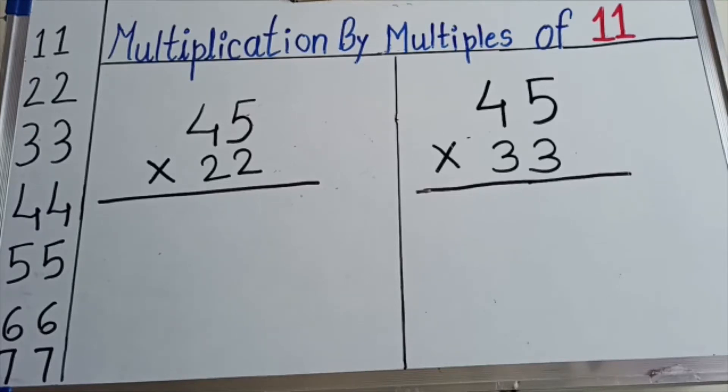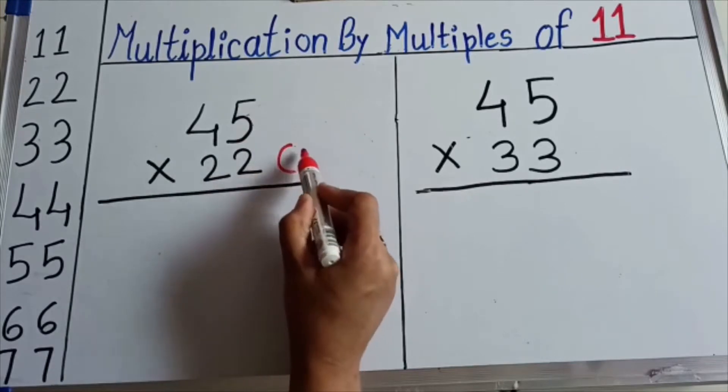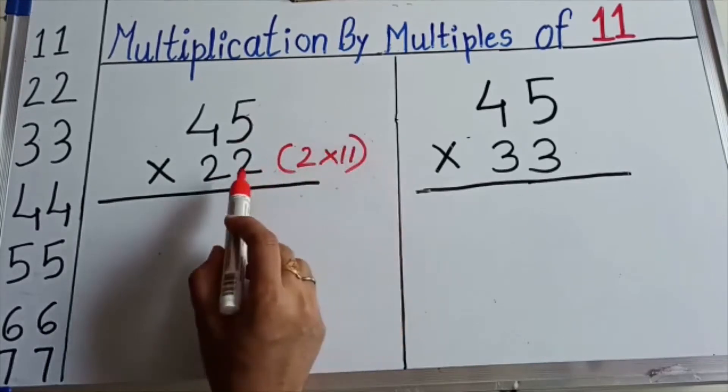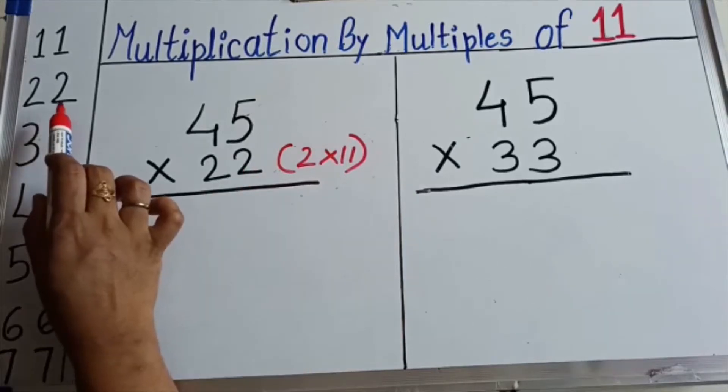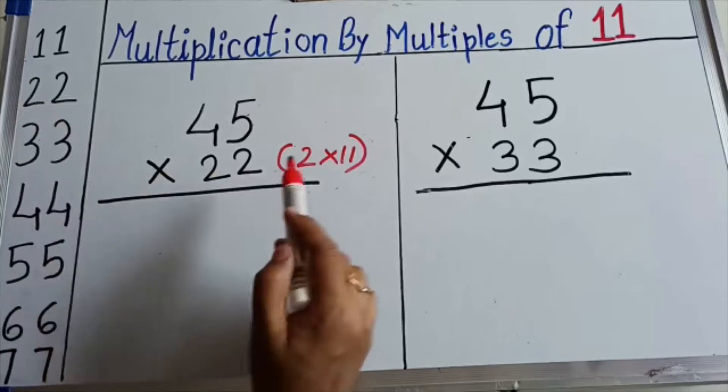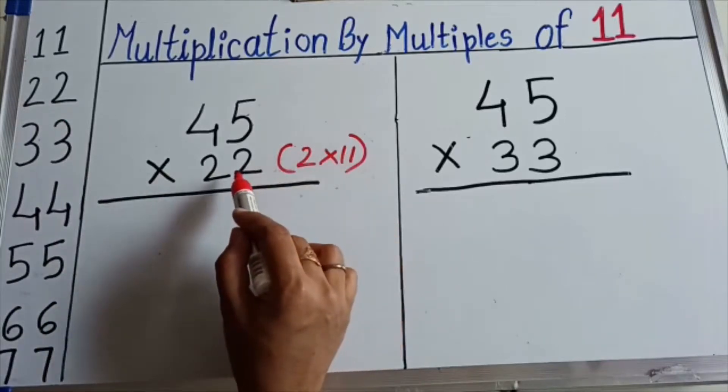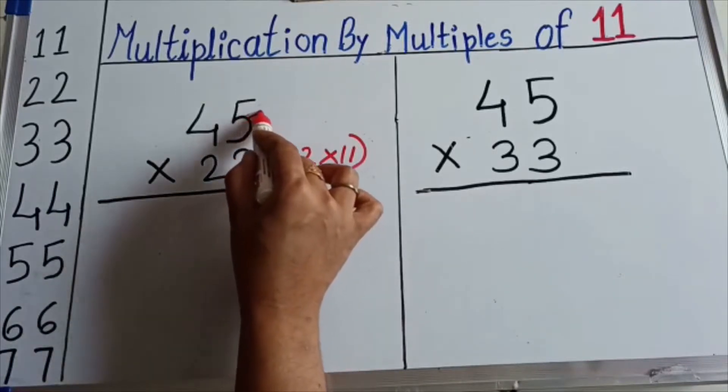In this video we will learn how to multiply multiples of 11. Here 45 is multiplied by 22. I will write 2 into 11 because 22 comes at the second position in the table of 11. 2 times 11 is 22. Now we will solve this. I will first multiply 45 with this 2.